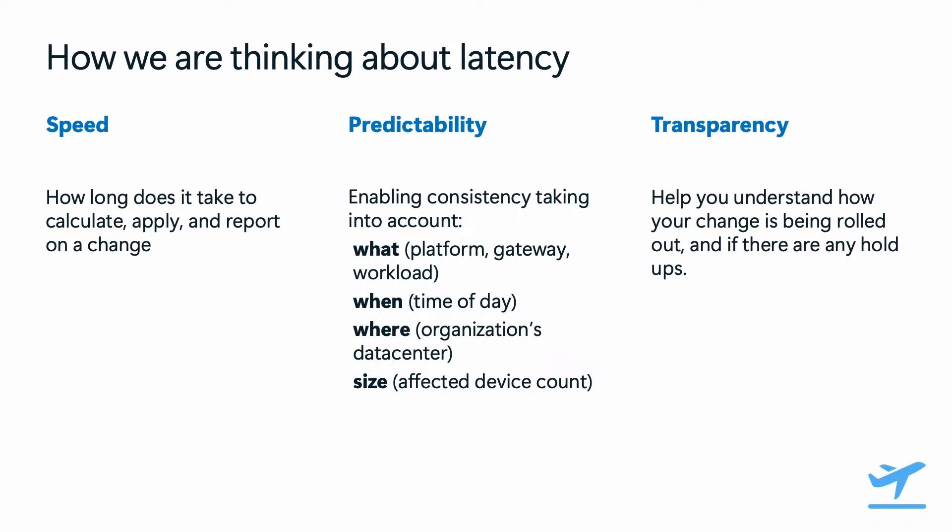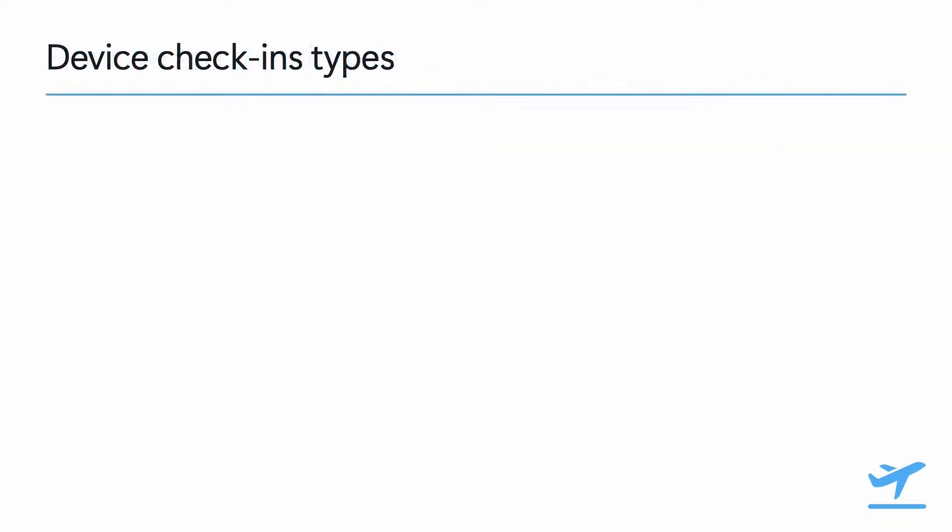In this session I'll spend a little bit of time on each, but first let's level set on how things work today. Device check-in is the process that enables your organization to maintain control over the devices you manage, ensuring security requirements are enforced, applying any pending updates to policies or apps, then updating the Intune reports for that device with the latest information.